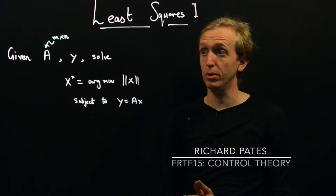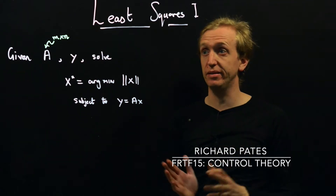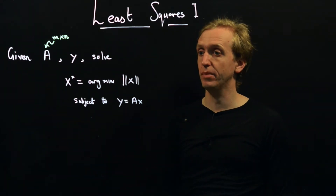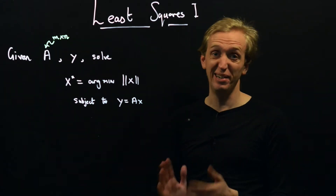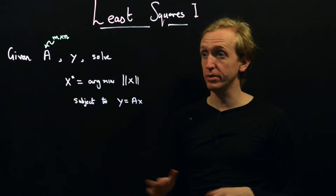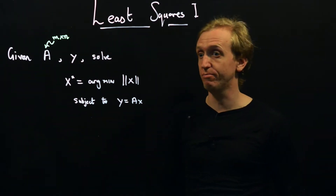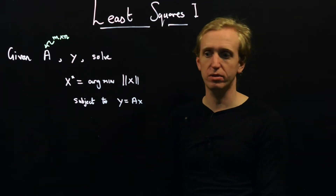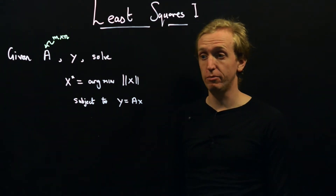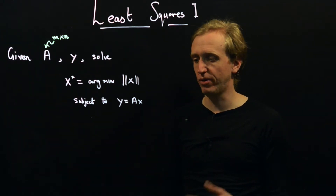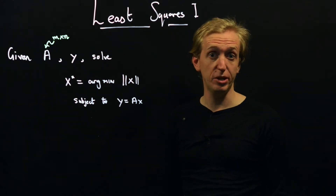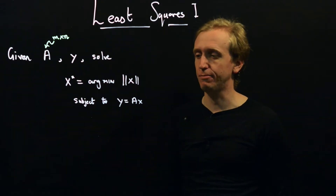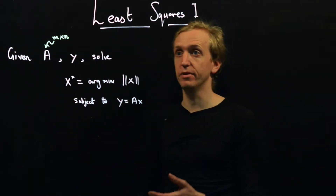We're now going to start to talk about least squares problems. We're actually going to see two types of least squares problem — incredibly closely related. One would typically be called a least norm problem and it's incredibly useful. The uses of this go way beyond anything we're going to learn about in this course. These least squares methods are used almost everywhere for solving engineering problems. The main reason is they provide a very simple but quite general class of optimization problems which have an analytical solution, and it's having this analytical solution that is fundamental to a lot of their utility — it's the magic of least squares.